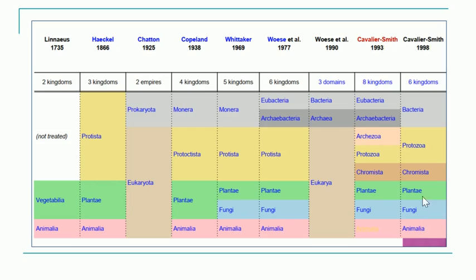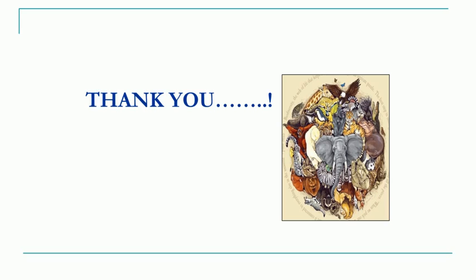Further, we looked at the eight-kingdom system proposed by Cavalier and Smith, which introduced two new kingdoms — Archeozoa and kingdom Chromista. In Archeozoa, all eukaryotic unicellular organisms are included, and in Chromista those organisms not properly fitting the protozoans. Finally, the seven-kingdom classification system was examined, where Archeozoa was removed and organisms were placed in either Protozoa or related groups. Today's lecture summarized the six-kingdom, eight-kingdom, three-domain, two-empire, and seven-kingdom classification systems.